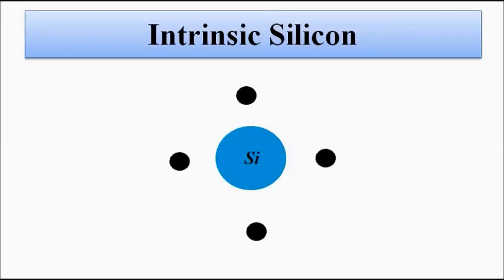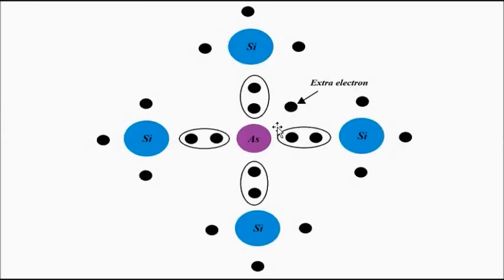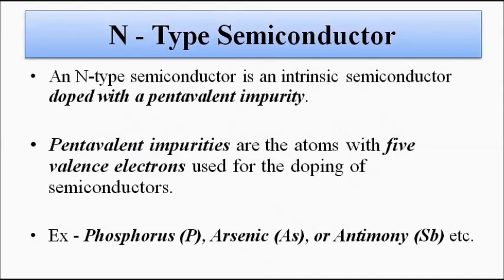Since this pentavalent impurity is donating an extra electron to the intrinsic silicon, it is called donor impurity — because it donates an extra electron to the intrinsic semiconductor, thereby contributing to its increased conductivity. The majority charge carriers for an N-type semiconductor are electrons, which carry negative charge. That's why it's called N-type — N for negative.